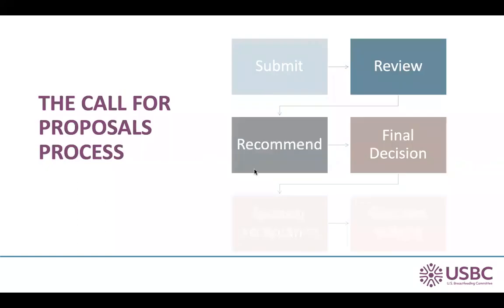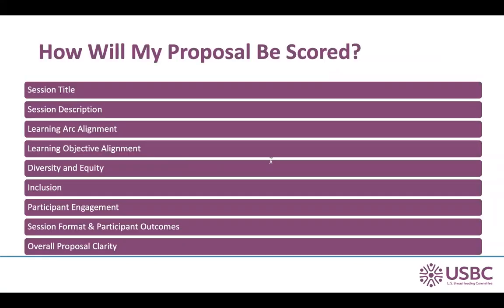Now let's talk about the next three phases in the process: review, recommendation, and making the final decisions. After the deadline, the Conference Program Committee will begin to review all of the submissions. Each proposal will be reviewed by at least three reviewers, and the final scores will then be averaged. The proposal rubric, which is available to everyone, outlines how each submission will be reviewed and scored.